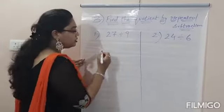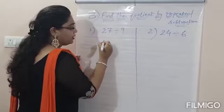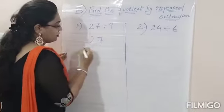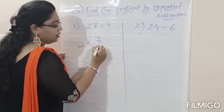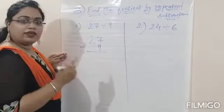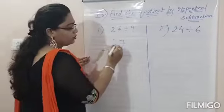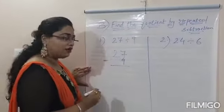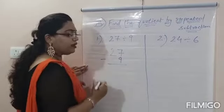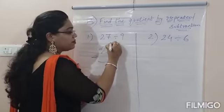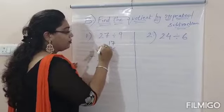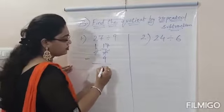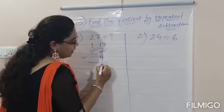So how will we solve it? First, we will write 27. We will subtract it by 9 till we get 0. 7 minus 9 is not possible because 7 is less than 9. So we will borrow from the next number: 7 will become 17 and 2 will become 1. 17 minus 9 is 8.